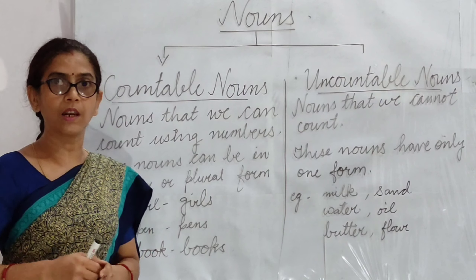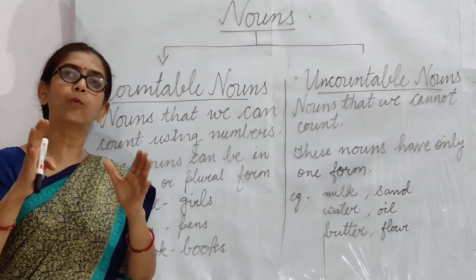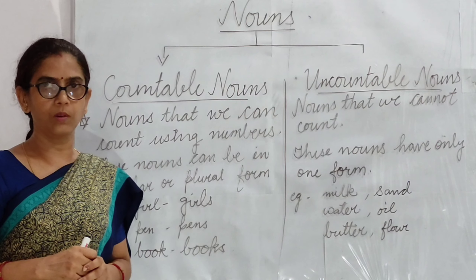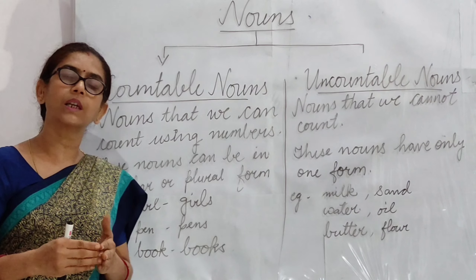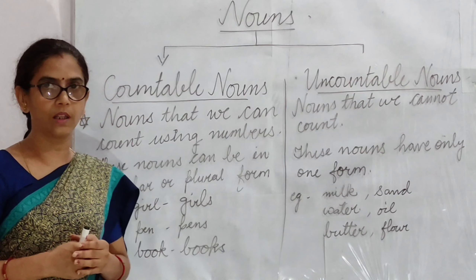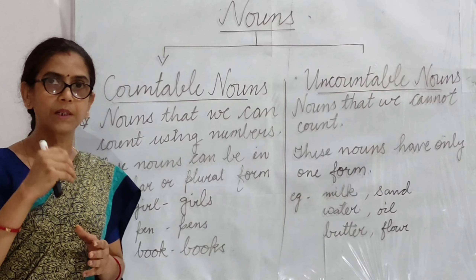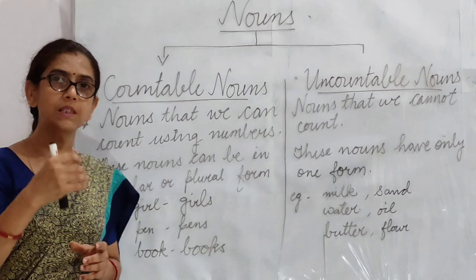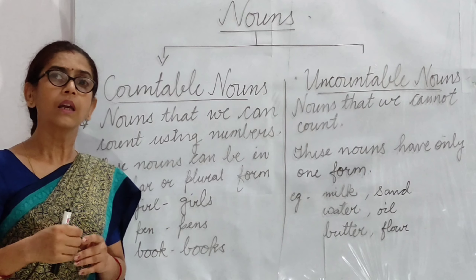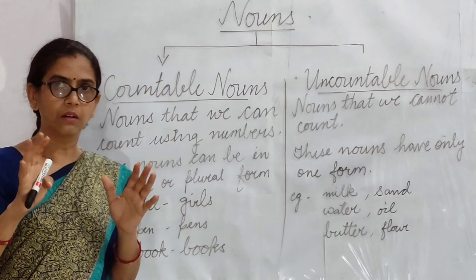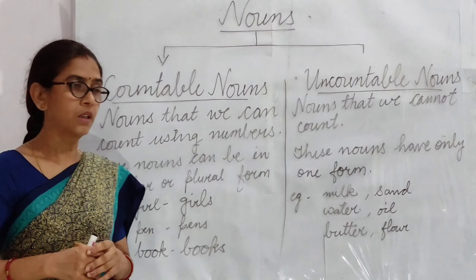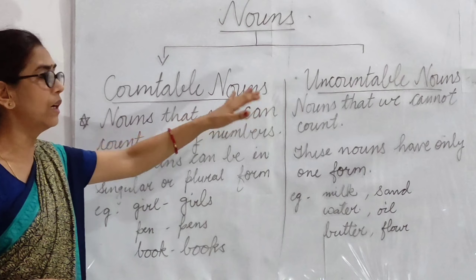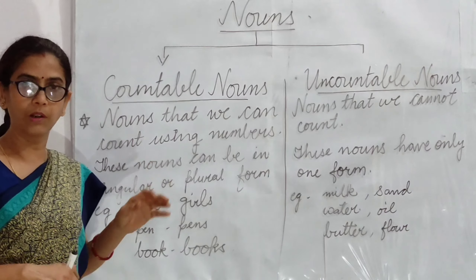So let's revise — nouns kya hoate hain? Naming words are called nouns. Jitne bhi naming words hoate hain, unhain noun kehte hain. Jaisay ki kisi person ka name ho gaya, kisi place ka name ho gaya, animal's name ho gaya — all these are called nouns. Now let's move to countable nouns and uncountable nouns.